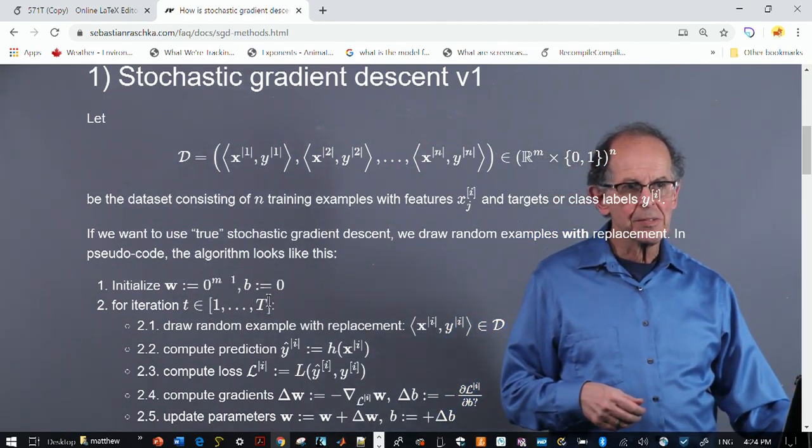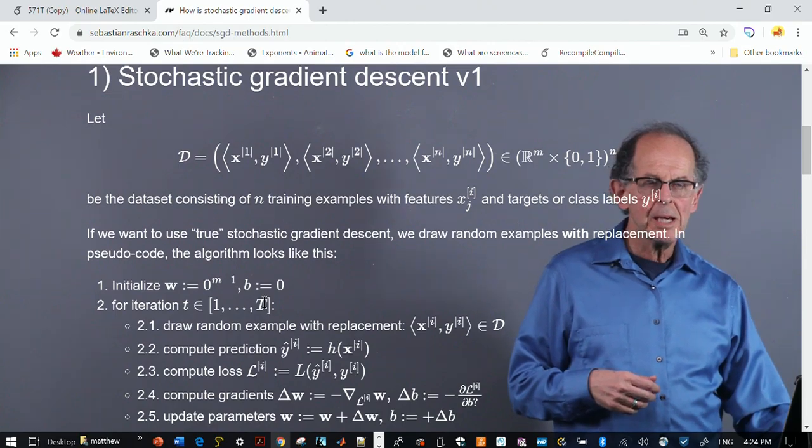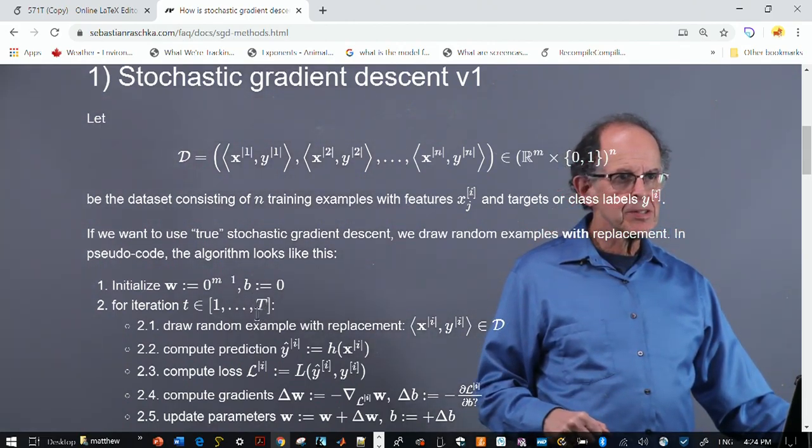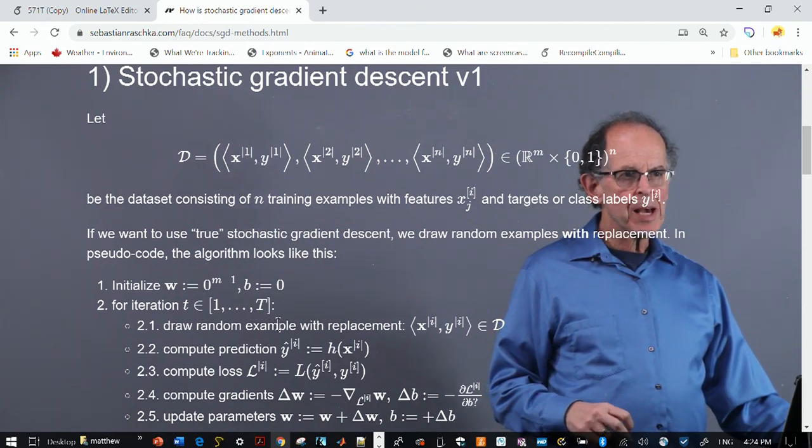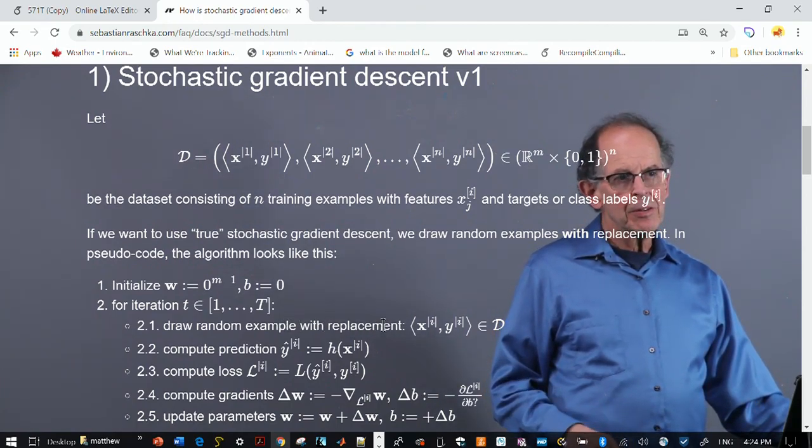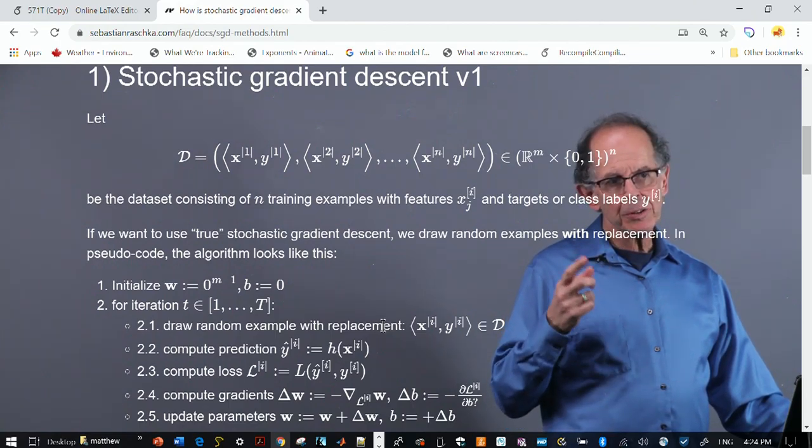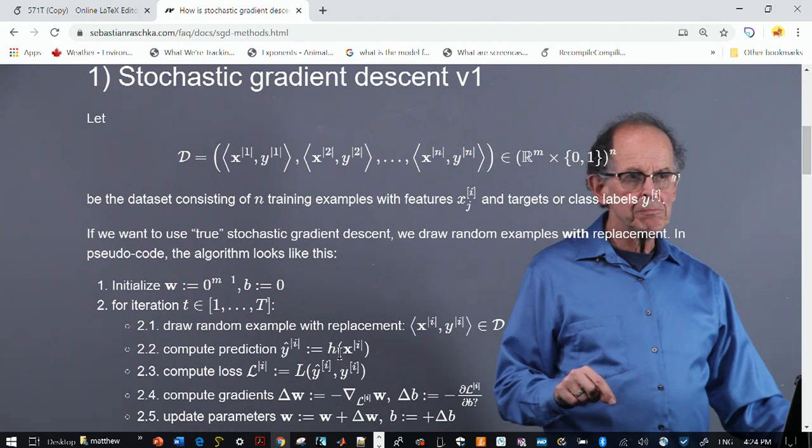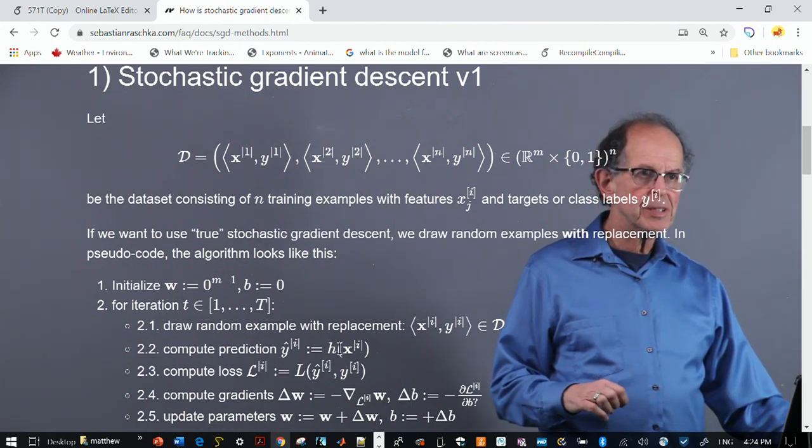So this is how you do it. For each iteration, and there are capital T of them, and we will make this more precise in the forthcoming methods, you draw one example from the data set. And when you draw it, when you're done, you'll replace it back into the data set.